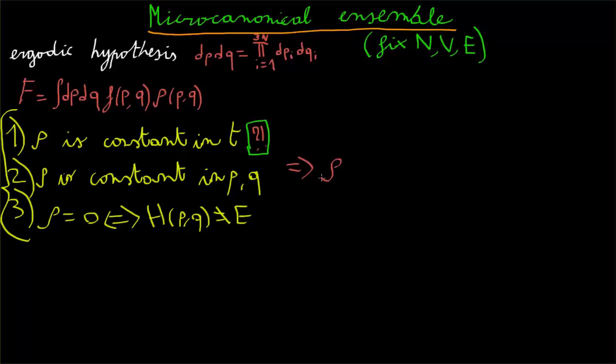This means that we're saying that rho will be equal to a constant every time that the energy of a state is equal to the total energy of the system. And it's going to be zero otherwise. This means that rho, as we've defined it, is defined on a surface in the phase state. That is,